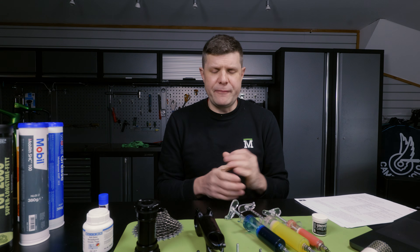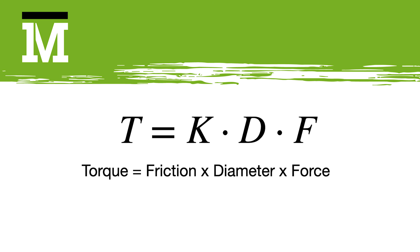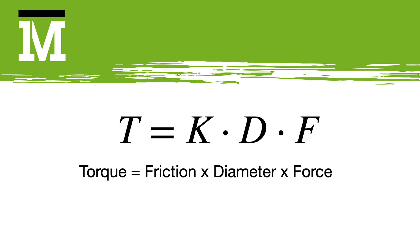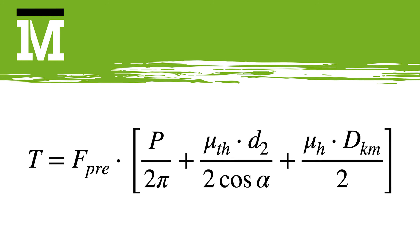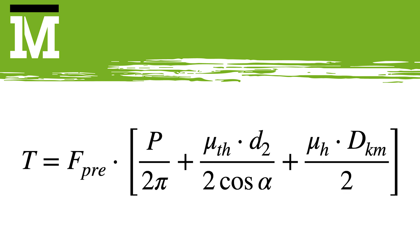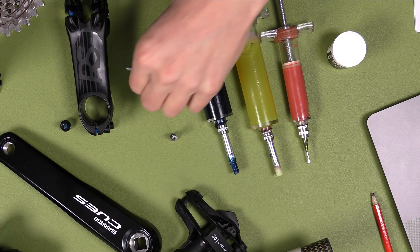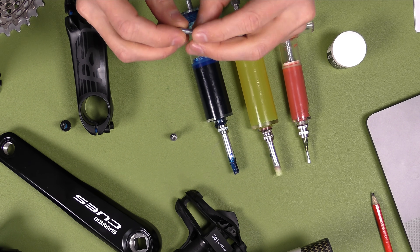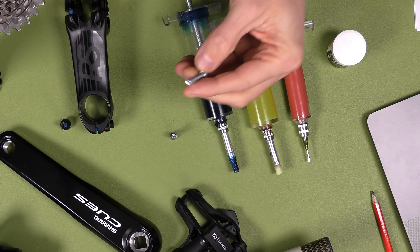Let's go back to our torque equation. T for torque equals K - the K factor, the friction of the bolt - by the dimension by the clamping force preload. Here is the full equation for those that are interested. As you can see, it's completely impractical to use in a workshop. What this equation is essentially asking for is the individual thread geometry of a bolt and then the coefficient of friction of the actual threads and the bolt head.